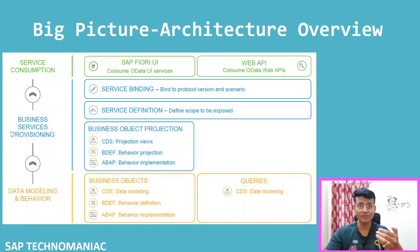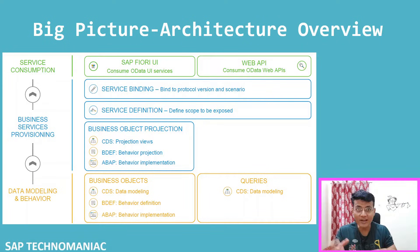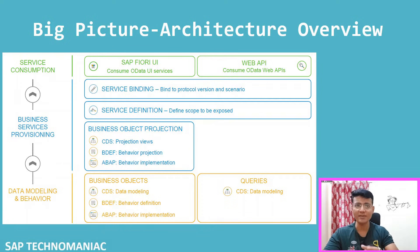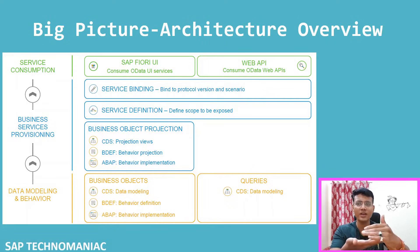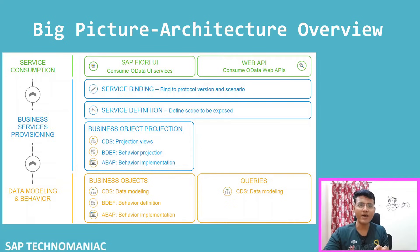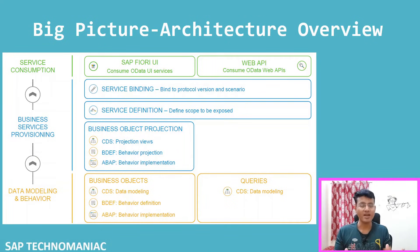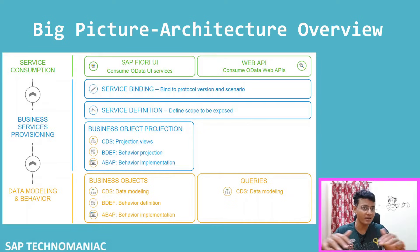To create OData services, we use the RAP architecture. This picture shows what all objects and artifacts are involved in creating that OData service. It is categorized into three parts. The first task is data modeling and behavior, where we define our data model - what data we need from different tables - and also define how that data model will behave, meaning what CRUD operations you can perform.